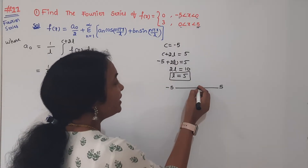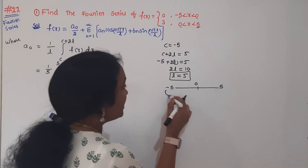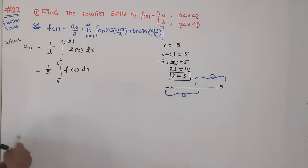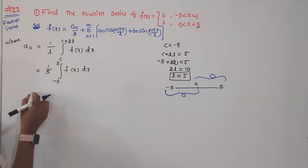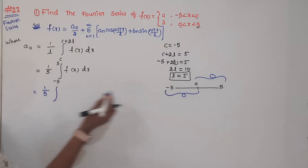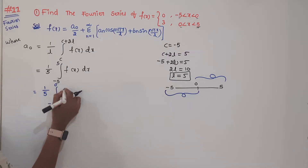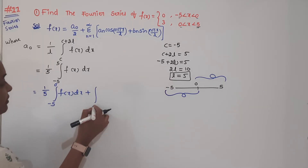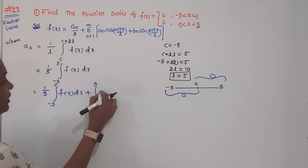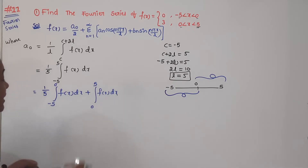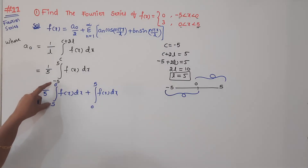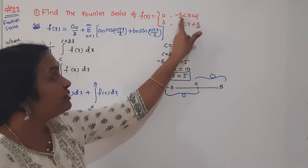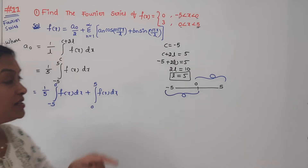The interval minus 5 to 5 is divided into two sub-intervals: minus 5 to 0, and 0 to 5. So we write 1 by 5, integral from minus 5 to 0 of F(x) dx, plus integral from 0 to 5 of F(x) dx. Now, when x lies between minus 5 and 0, what is the function value? It is 0.